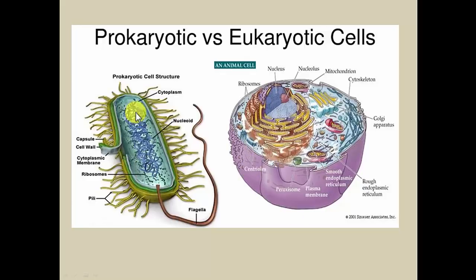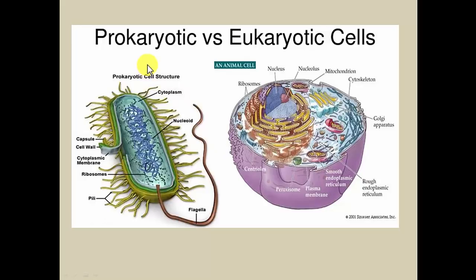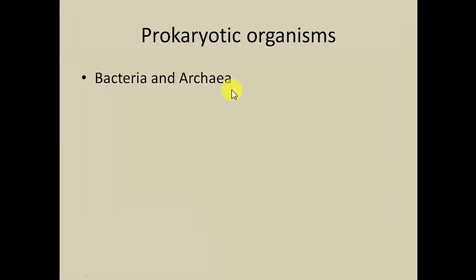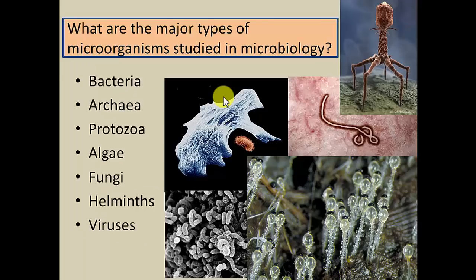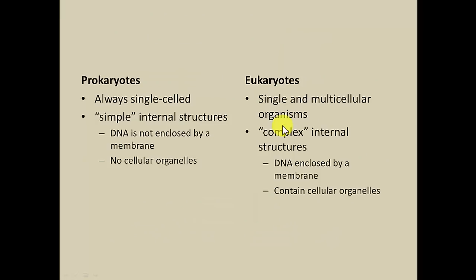There are other features on the diagram — a big tail and little structures around the outside. Those are significant features but not common to all of them, so they're not part of the defined characteristics. We'll learn about those starting in Chapter 4. Going back to our major types of microbes studied, I'm going to relate them to whether they're prokaryotic or eukaryotic. Starting out, we'll look at the prokaryotic microorganisms.